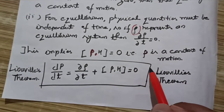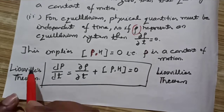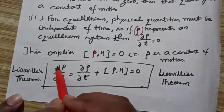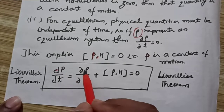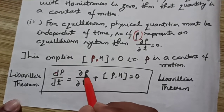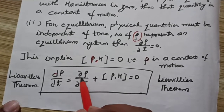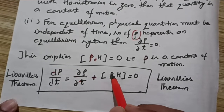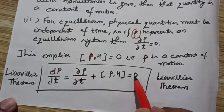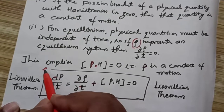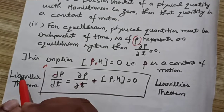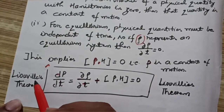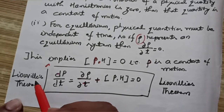And one thing you have to consider here: this is Liouville's theorem. It states that Dρ/Dt = ∂ρ/∂t + {ρ, H} = 0. This equation is the statement of Liouville's theorem. We shall see later on what is the role of Liouville's theorem and how it can be helpful in distinguishing between the various kinds of ensembles.